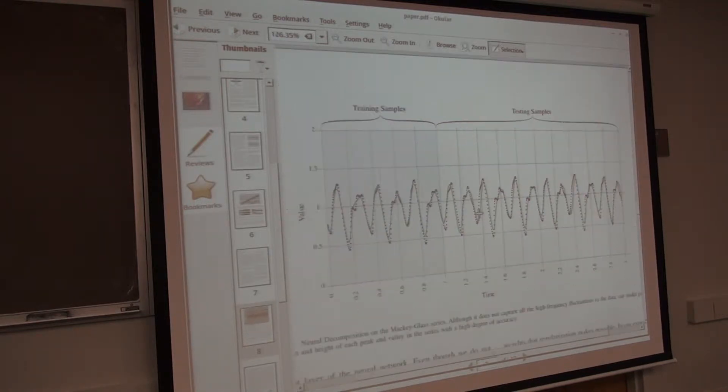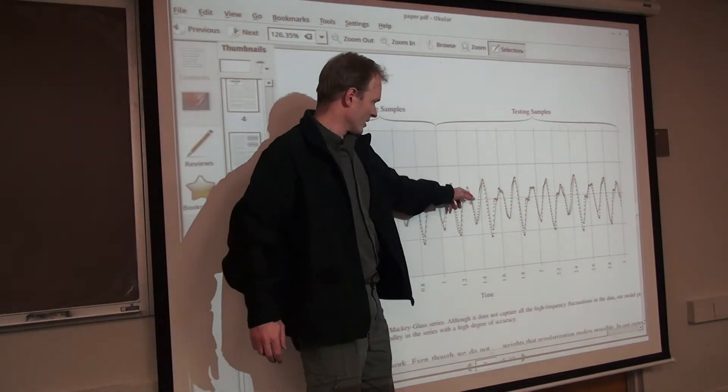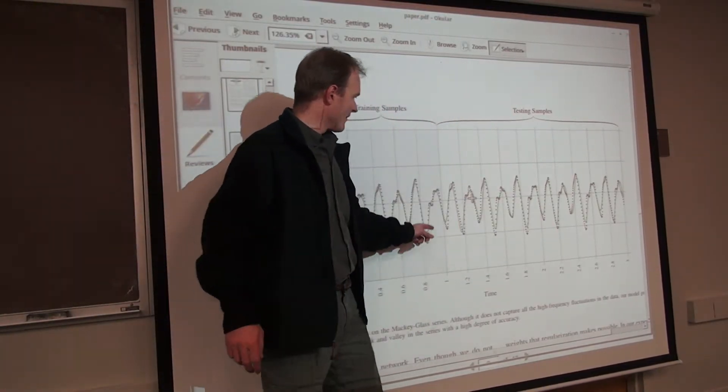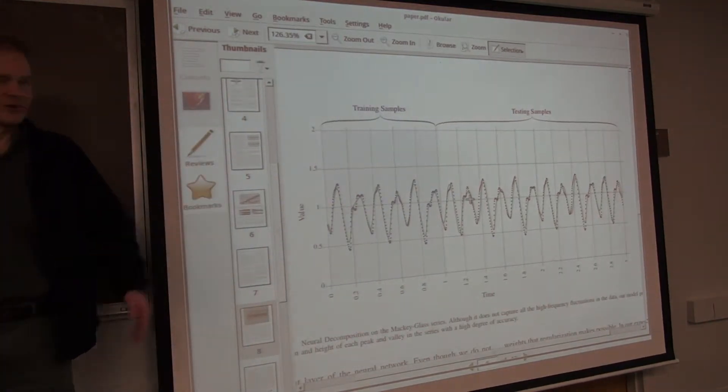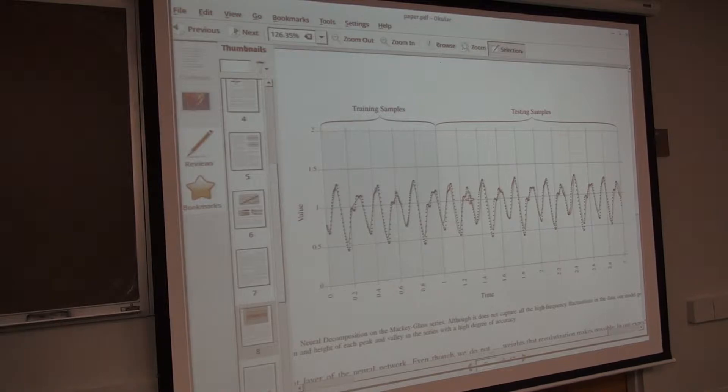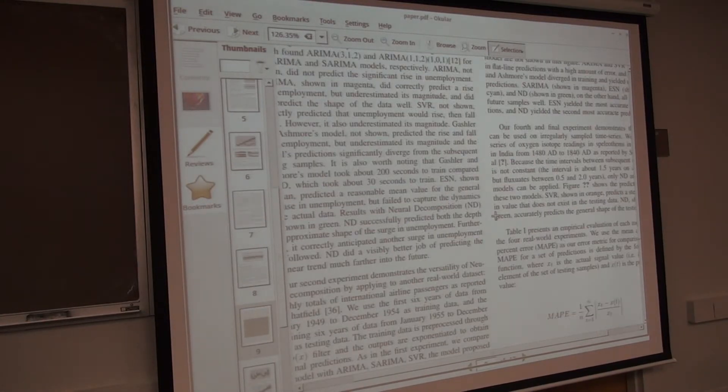Here we're doing some time series stuff and we trained on these points and we try to predict what's going to happen in the future and the green line here is what our neural network model predicts will happen in the future and the red points are what actually happens given the equation that we're trying to predict. This happens to be a chaotic time series. They get cooler.